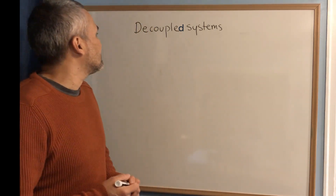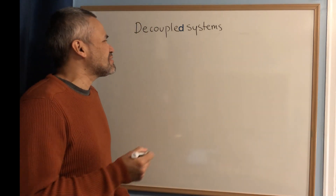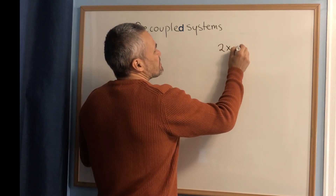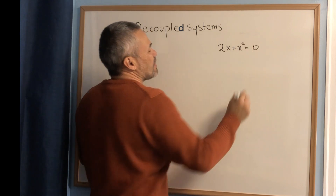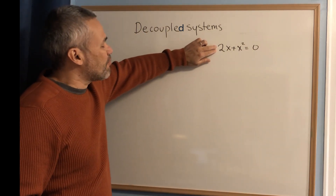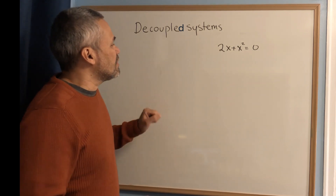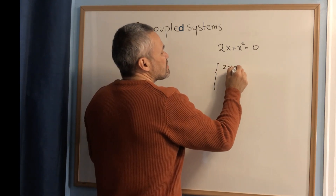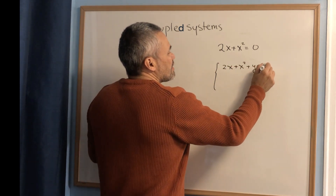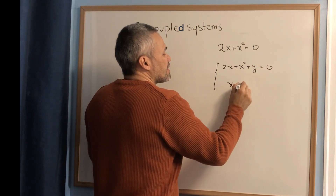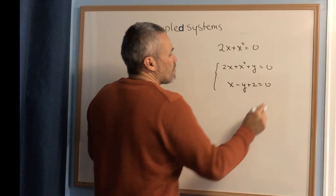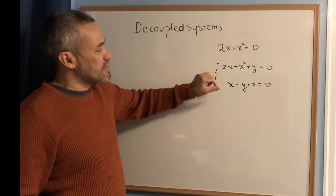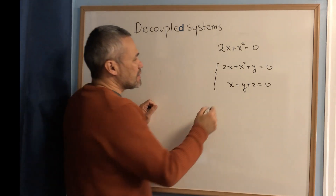In this video we will explain decoupled systems. To compare, if we have an equation like 2x plus x squared equals 0, we are looking for one number and we can solve that equation. But if we have something like 2x plus x squared plus y equals 0, and x minus y plus 2 equals 0, then this is a system of equations and it is more challenging because you need to find two numbers.